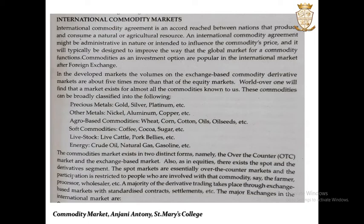There are markets for almost all commodities worldwide. Commodities are classified into six categories: precious metals such as gold, silver, and platinum; other metals such as nickel, aluminium, copper, etc.; agro-based commodities such as wheat, corn, cotton, oils, oilseeds, etc.; soft commodities such as coffee, cocoa, sugar, etc.; livestock including live cattle, pork, bellies, etc.; and energy commodities such as crude oil, natural gas, gasoline, etc. These are the major items traded in this commodity market.